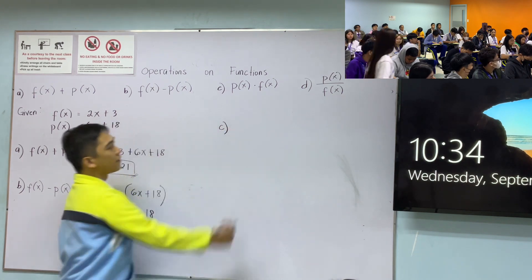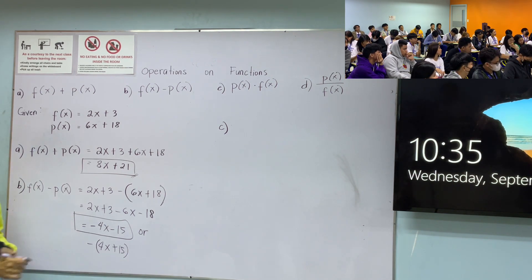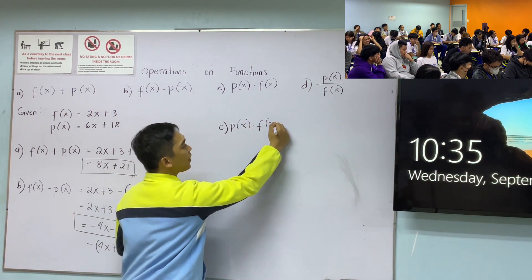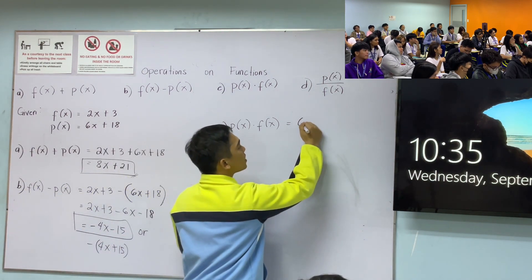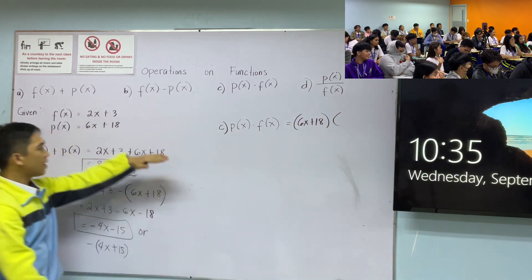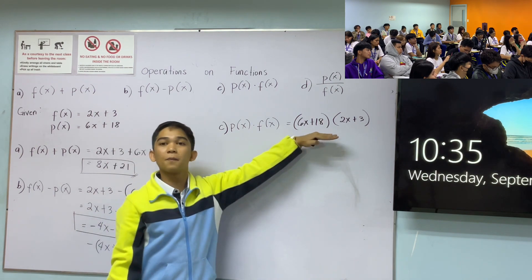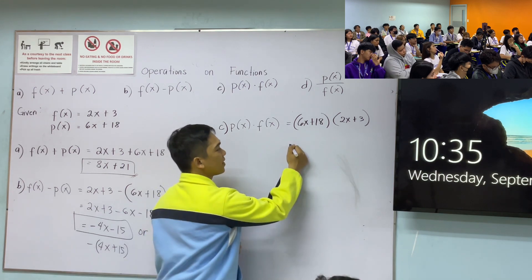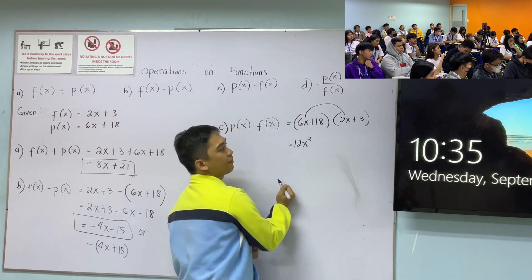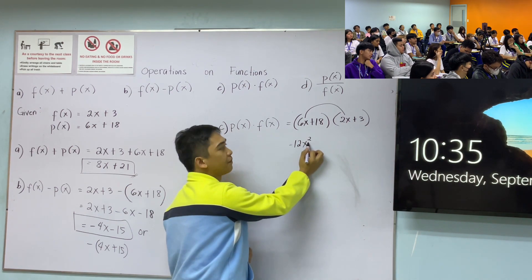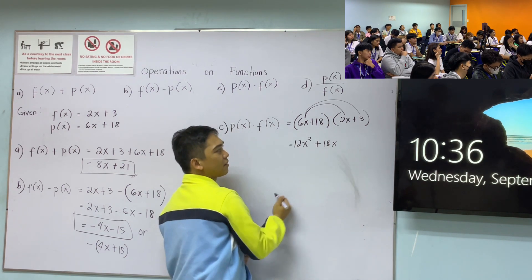For letter c, multiplication: p(x) times f(x). Get the values — p(x) = 6x + 18, multiply by f(x) = 2x + 3. How do we perform this? FOIL method. First term: 6x times 2x = 12x².